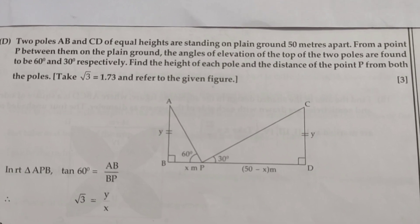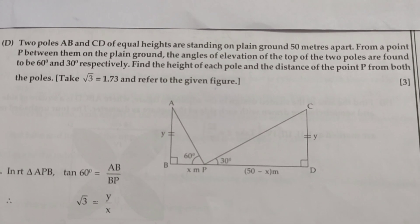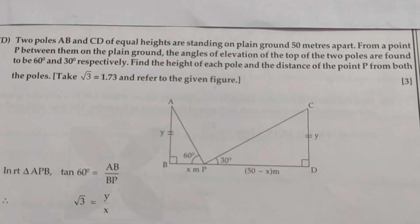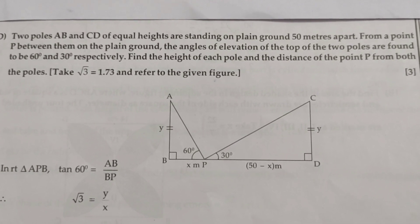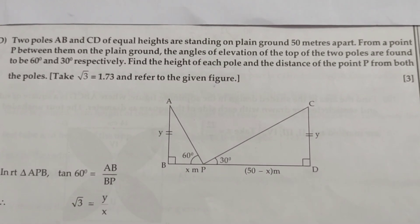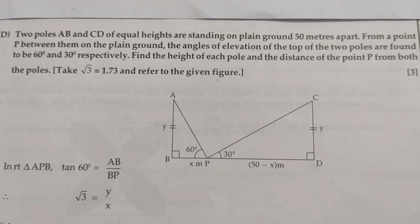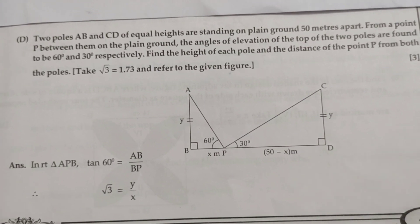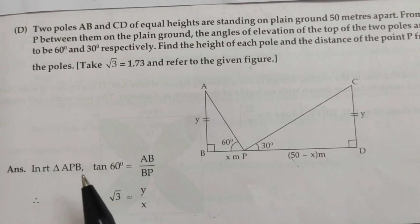Two poles AB and CD of equal height are standing on plain ground 50 meters apart. From a point P between them on the ground, the angles of elevation of the tops of the two poles are 60° and 30° respectively. Find the height of each pole and the distance of point P from both poles. Take √3 = 1.73.